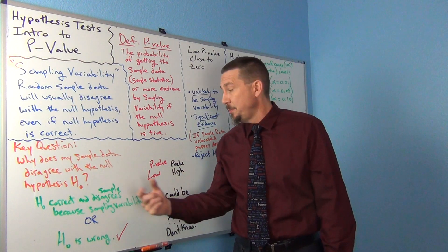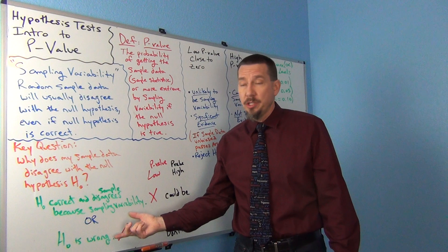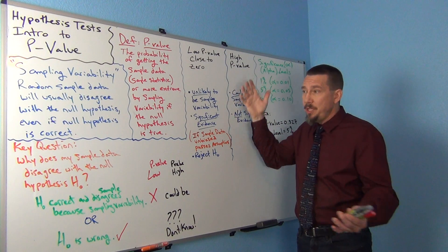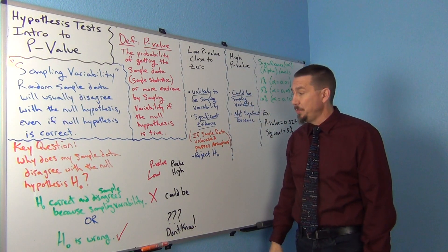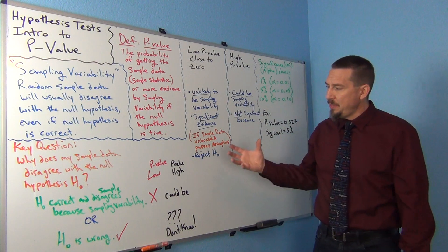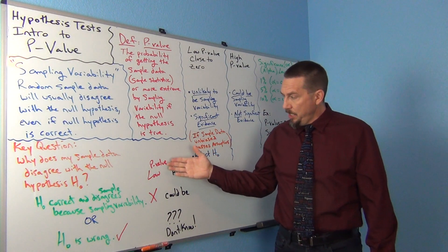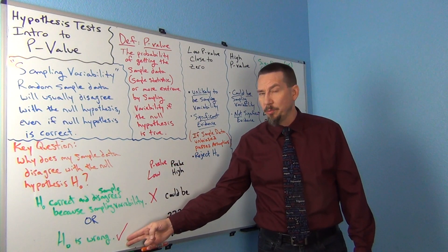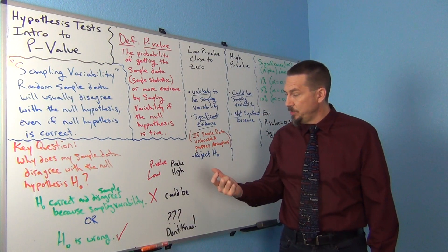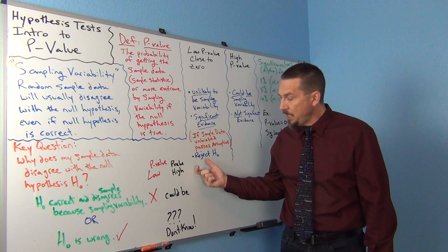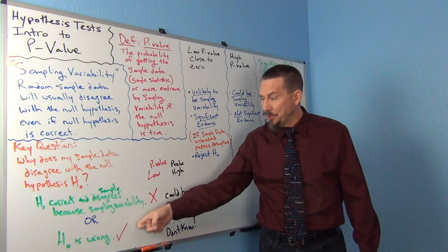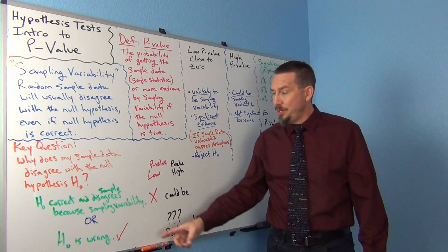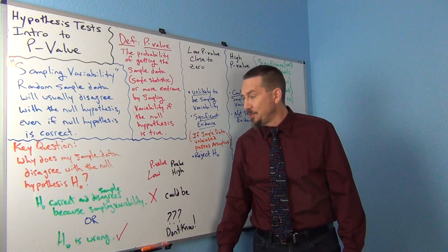It could be sampling variability, but it might also be that the null is wrong, because my sample data does disagree with it. Even a 30% p-value would mean only a 30% probability that it was sampling variability. So a low p-value tells you it's probably not sampling variability, and you sort of know that the null is probably wrong. A high p-value tells you it could be sampling variability, and we don't really know if the null is right or wrong. Sometimes we say we do not have enough evidence to know that the null is wrong.